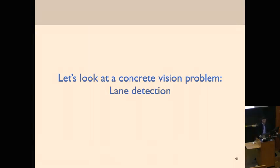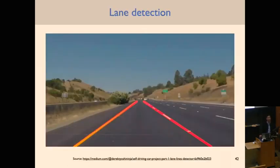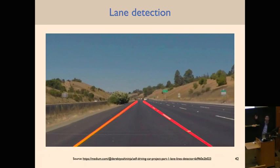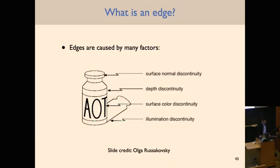Let's look at a concrete vision problem to build intuition: lane detection as a toy vision problem, motivated by autonomous vehicle lane-keeping. You want to keep the vehicle centered in the lane, so you need to detect the lane boundaries. Even the seemingly simple problem of edge detection is surprisingly complicated. What exactly is an edge? Edges can be caused by surface normal discontinuities, depth discontinuities, color discontinuities, or illumination discontinuities — such as the boundary between shadow and non-shadow.